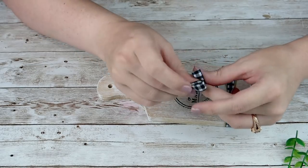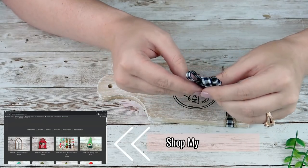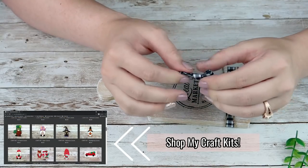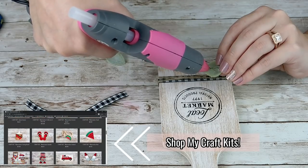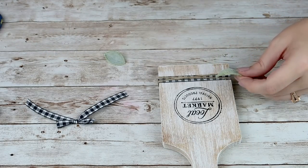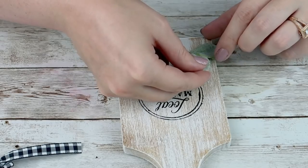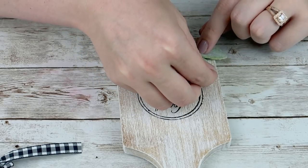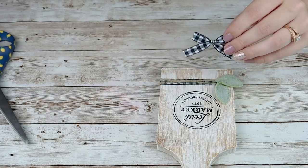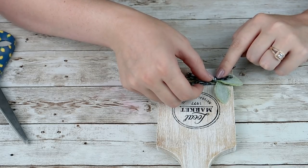I took more of that buffalo check ribbon and tied a simple bow by taking two loops and tying them together, then adjusting the loops to the size I wanted. I grabbed a couple leaves of lamb's ear and hot glued that to one corner of my cutting board, then hot glued the bow right to the top. The last thing is to run some twine through the hole at the top, tie a couple double knots, and that's it for this DIY.